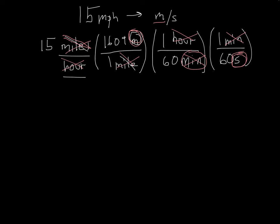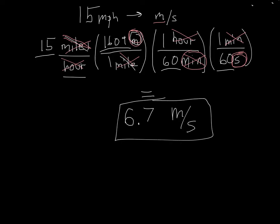I can multiply these numbers together. I can take out my calculator: 15 times 1,609 divided by 60 divided by 60. And when you plug and chug all this in, you will find that 15 miles per hour is 6.7 meters divided by seconds. And you've just done dimensional analysis.